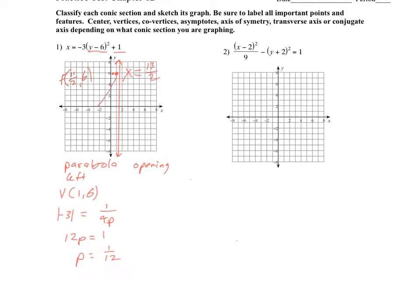So our parabola looks like that. The axis of symmetry goes right through the vertex — the axis of symmetry is the line y equals 6. So from the equation: parabola opening to the left, vertex from h and k, p found using absolute value of a equals 1 over 4p, and then graph it. Good job.